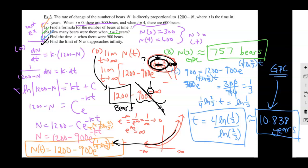So the limit of N as T approaches infinity is 1,200 bears — that's your equilibrium point, your carrying capacity for this ecosystem. That's the ideal population number your model approaches over time. Notice that 1,200 was in the original problem — we started with 1,200 minus N. It's not a coincidence that 1,200 is the limit value. As time goes forward, your population gets closer and closer to 1,200 bears. The number at the beginning of the question tells you the carrying capacity before you even start.